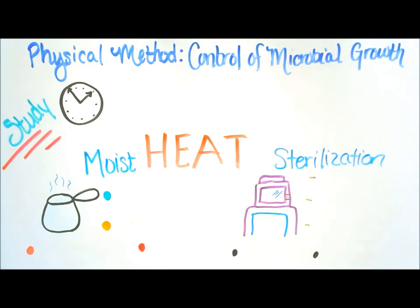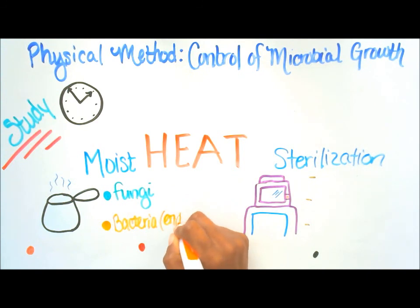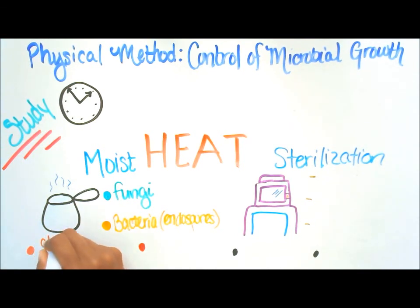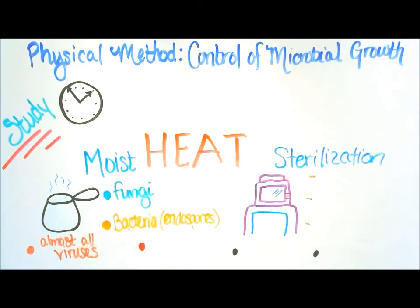Here I have two examples of moist heat sterilization. Here I have boiling and I have autoclave. We're going to start with boiling first. So with boiling, fungi can be killed. Bacteria can be killed, but with endospores they need to be left a little bit longer. Almost all viruses can be killed, and pathogens, harmful bacteria.